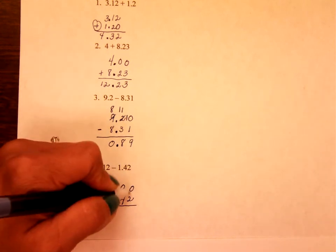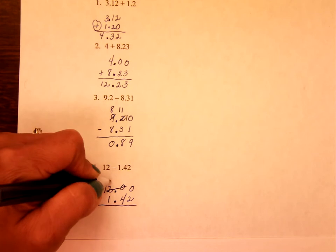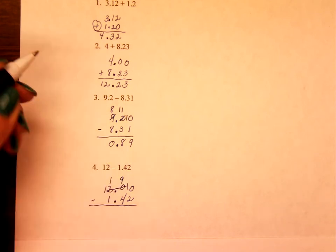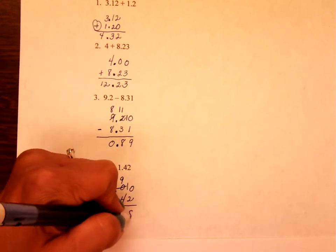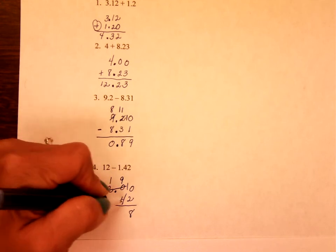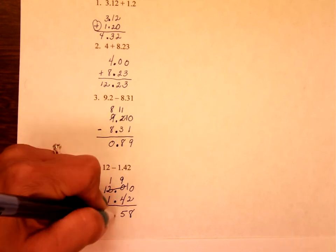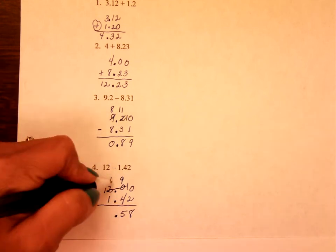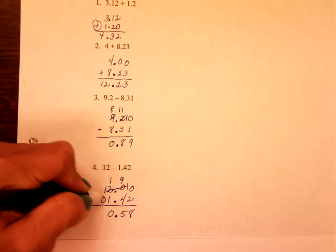So now you're going to subtract. Well, 0 minus 2 you can't do, so you have to borrow. So, 10 minus 2 is 8. 9 minus 4 is 5. Bring that decimal straight down. 1 minus nothing is 0. And 1 minus nothing is 1.